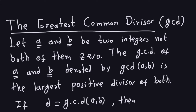The greatest common divisor is applied to two integers, so we have two integers A and B, and none of both of them are equal to 0 — that means A and B both cannot be 0. One of them could be, but the other one cannot. The reason for that is because if you allowed both of them to be 0, then the GCD will not be defined.